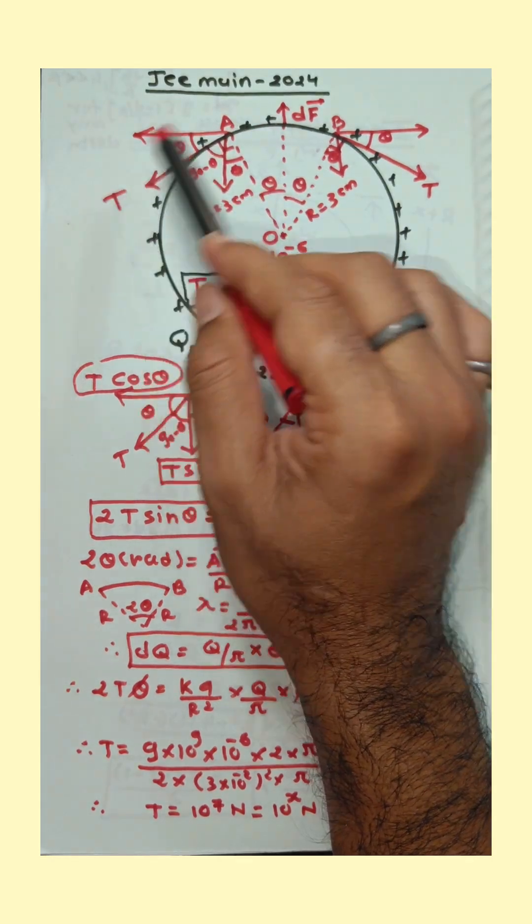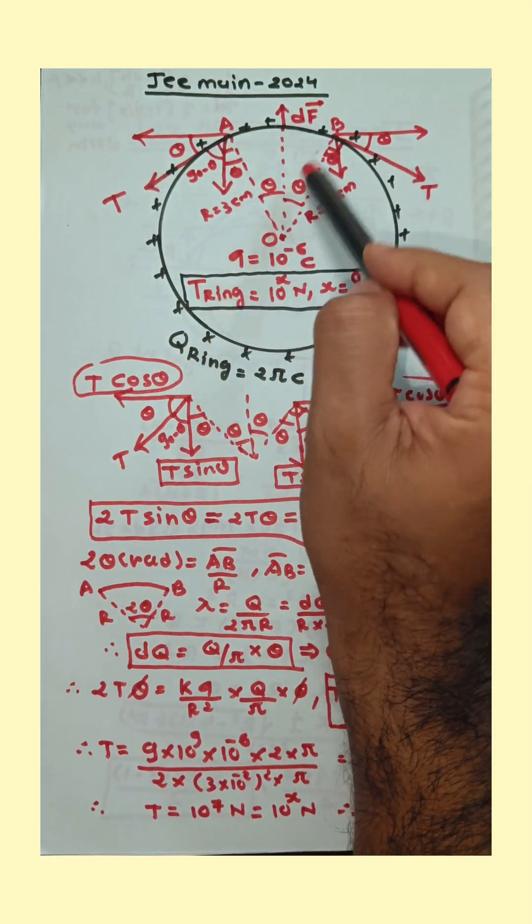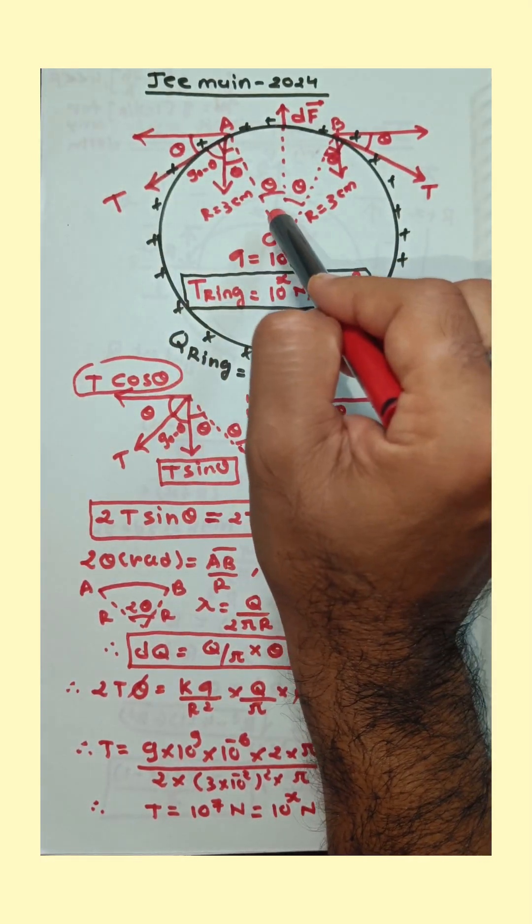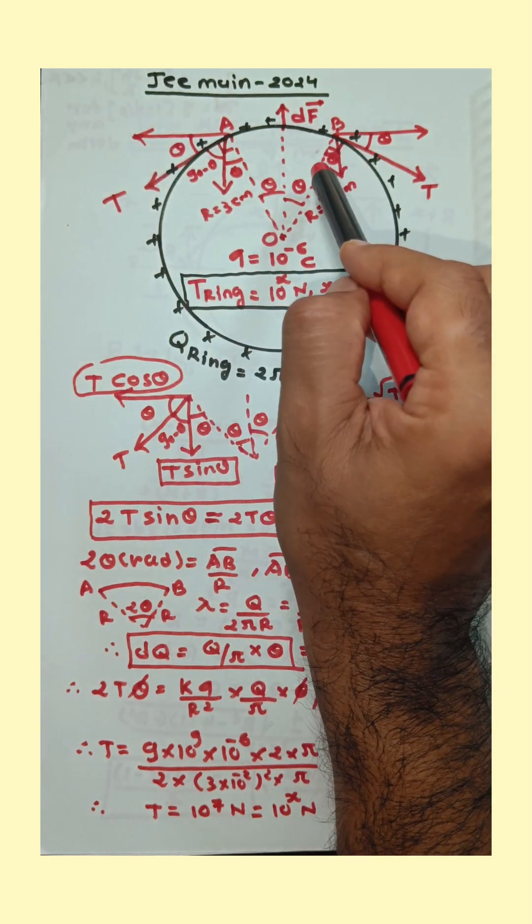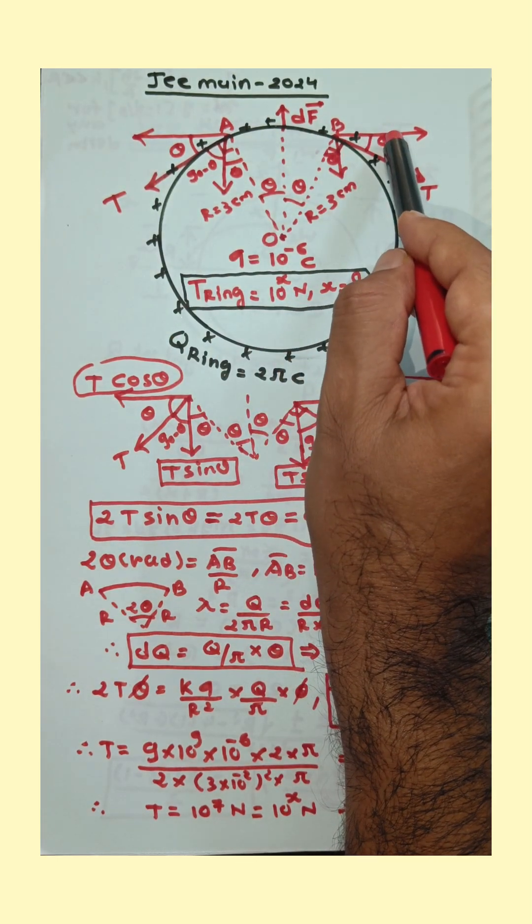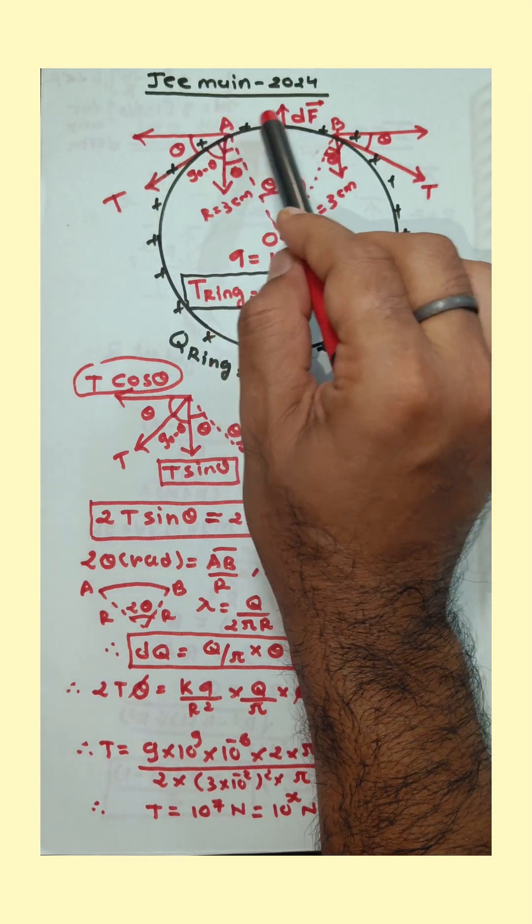Now here tension on the ring, that is in tangential direction and tension is perpendicular to radius. From the geometry angle are theta, 90 minus theta and theta. Here also theta, 90 minus theta and theta. Here angle between two radius is total 2 theta. Consider arc AB.